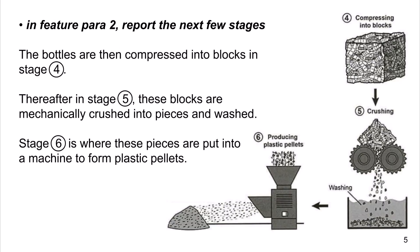In Feature Para 2, report the next few stages. The bottles are then compressed into blocks in stage 4. Thereafter in stage 5, these blocks are mechanically crushed into pieces and washed. Stage 6 is where these pieces are put into a machine to form plastic pellets.